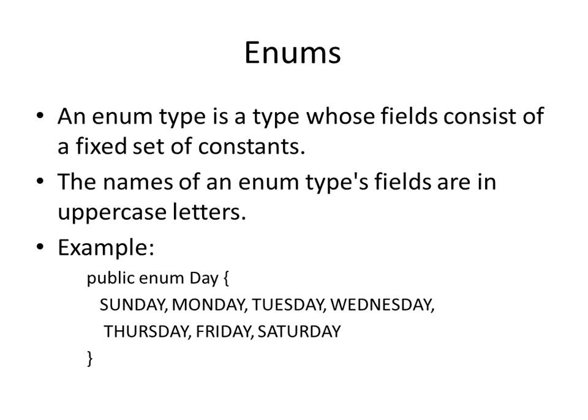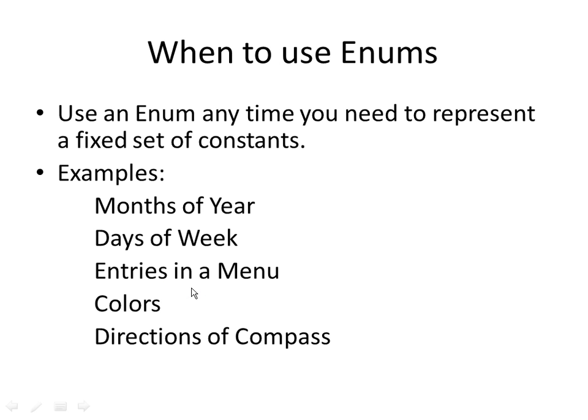An enum is just like a class. Instead of using public class, you say public enum. So whenever you need to represent a fixed set of constants, then it should indicate to you that you should be using an enum instead of a class. Some examples are like the months of the year, starting from January to December, the days of the week from Monday to Sunday. If there are some entries in a menu, those could be a good example for an enum.